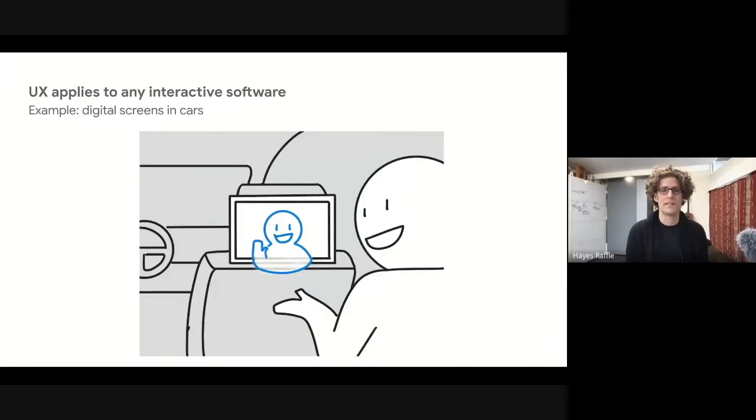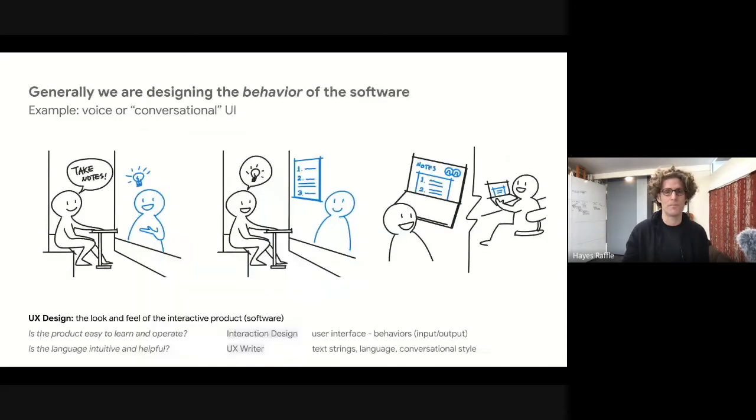UX applies to any interactive software. Most of the software being built these days are applications for phones or websites. UX would apply to anything else with software, whether it's a dishwasher or a washing machine, or more typically something quite interactive, like a digital screen in a car, or perhaps a conversational UI. Generally, we're designing the behavior of the software.